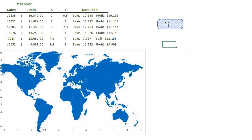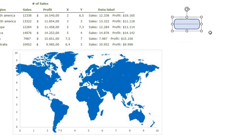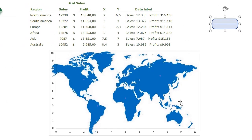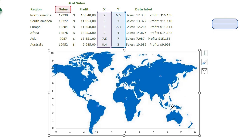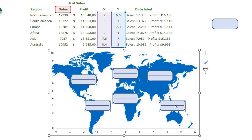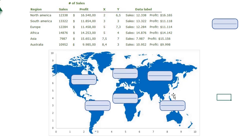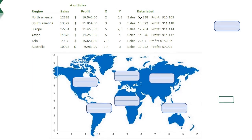I select the grouped badge, press Ctrl+C, then find one of the dots in my chart, click it, and press Ctrl+V to paste the badge into the chart. Now you can see the badges are placed in the chart, and the only thing we need to do is add the data labels.